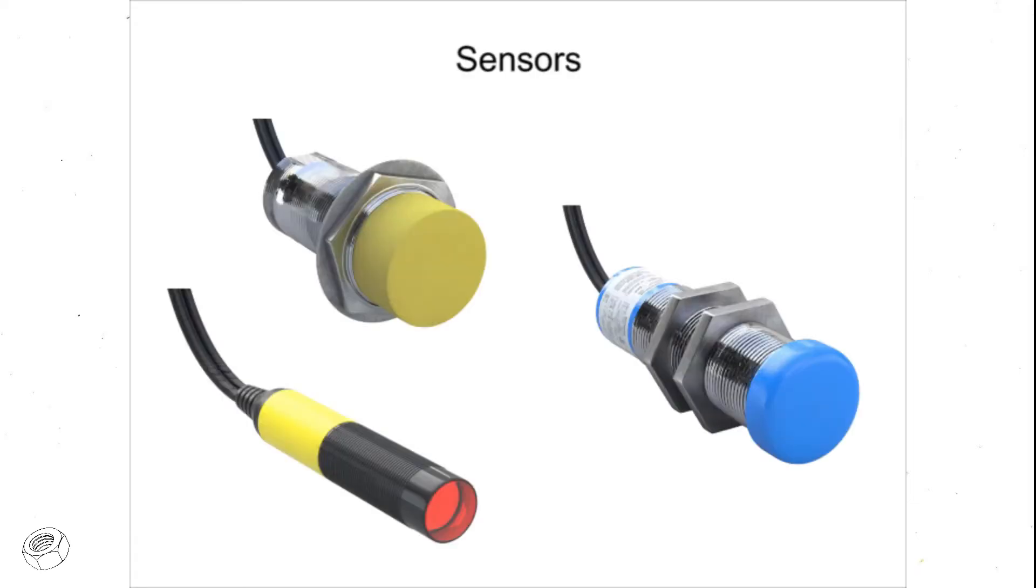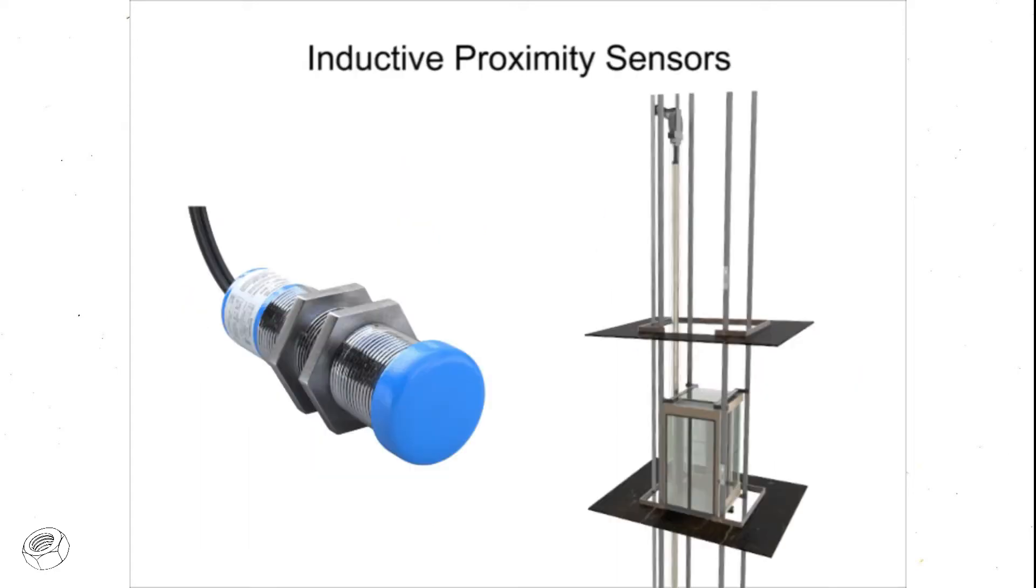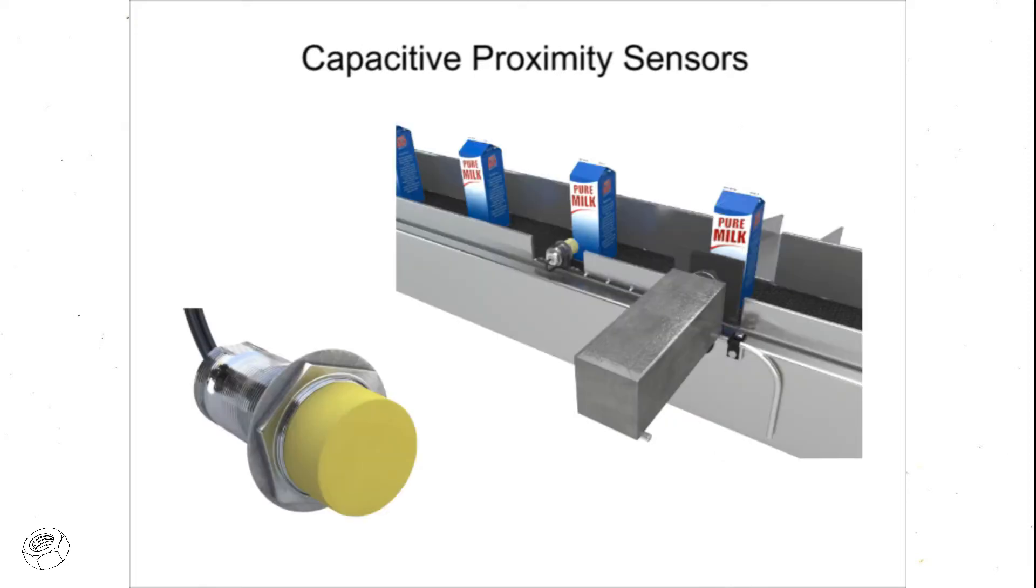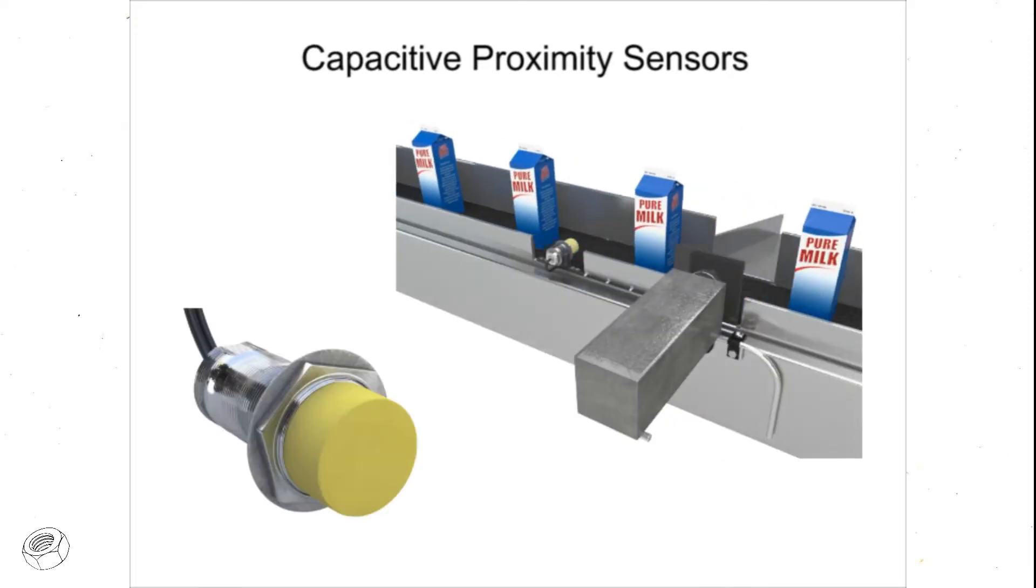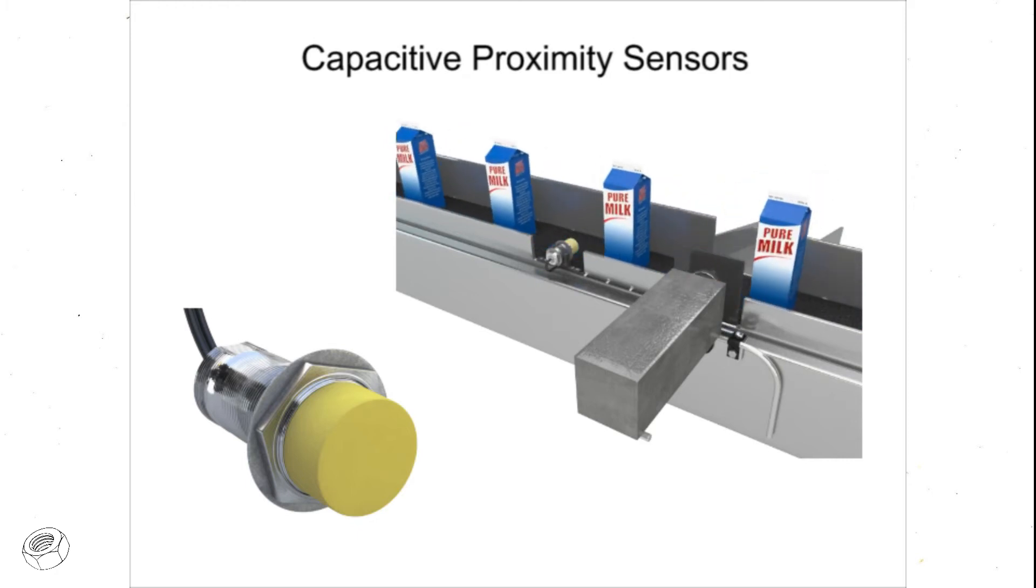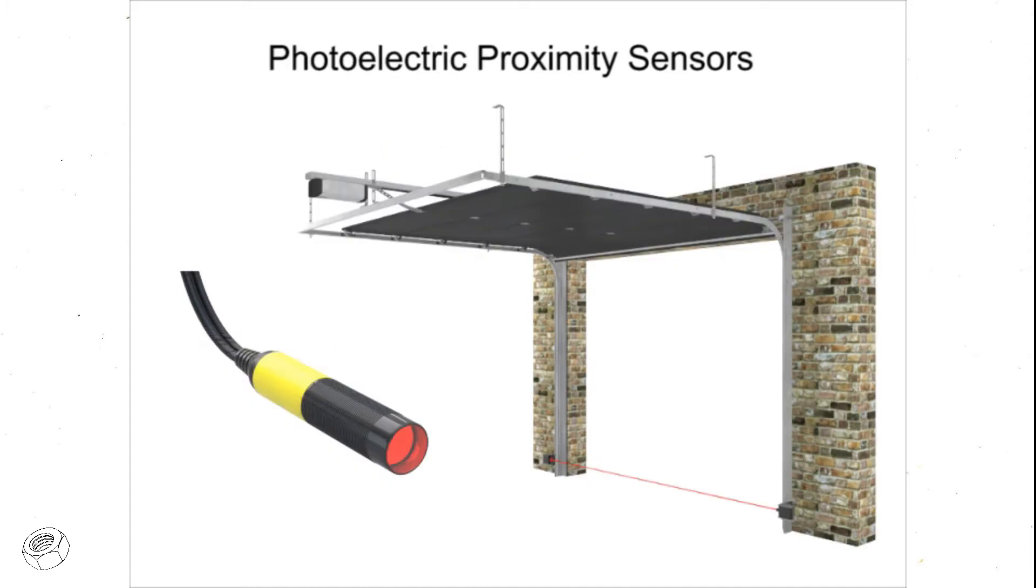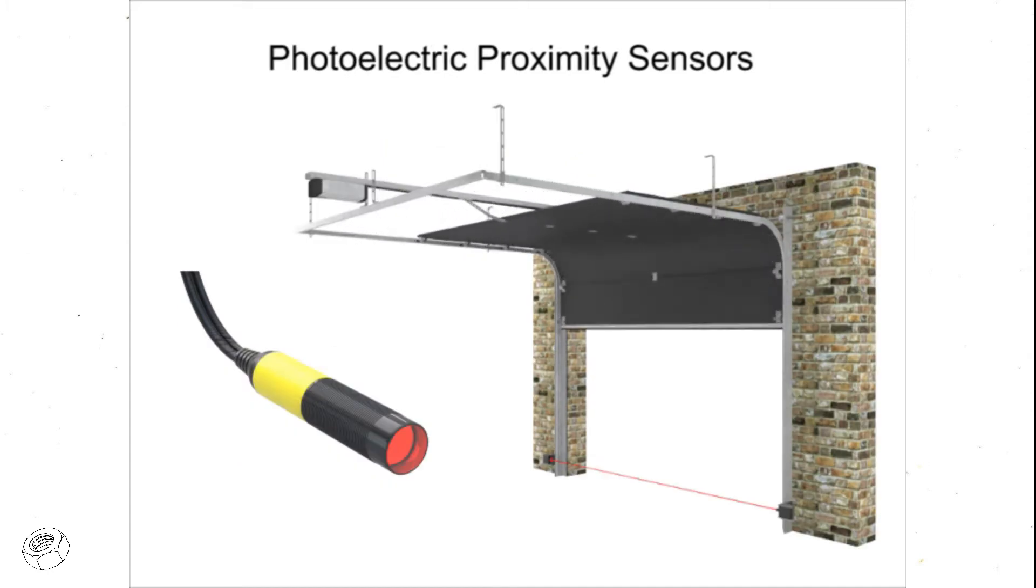Sensors of various types help us in everything we do and consume. Inductive proximity sensors are used in elevators, for example. Capacitive proximity sensors are used to detect liquids and other dielectric materials on the manufacturing floor. And photoelectric sensors are used in our homes and in countless other applications.